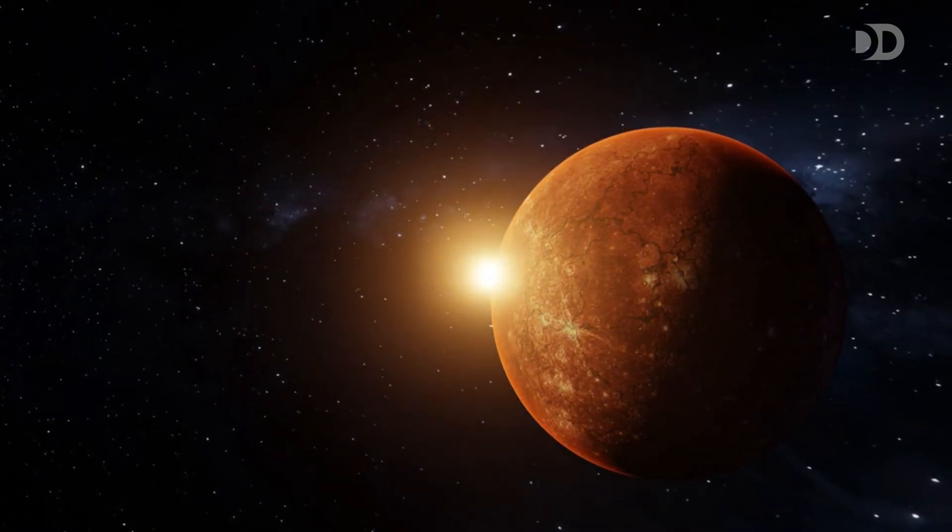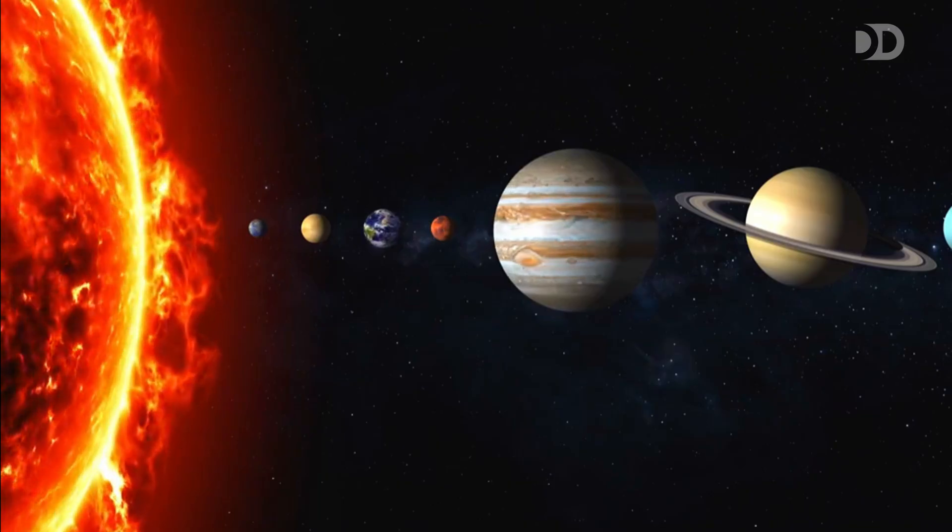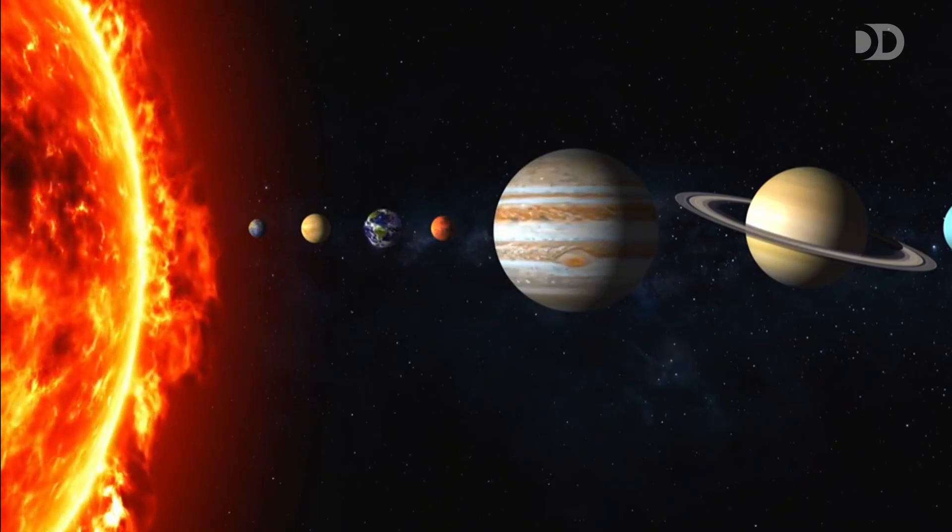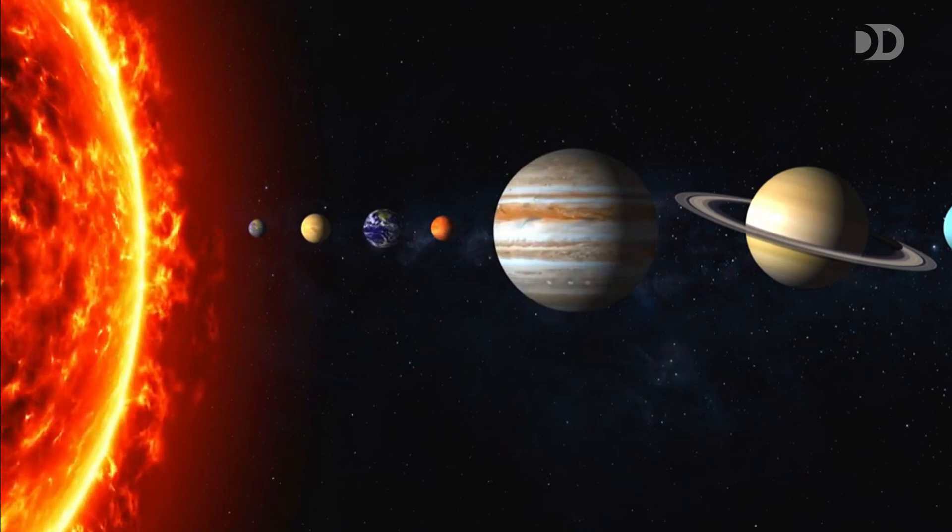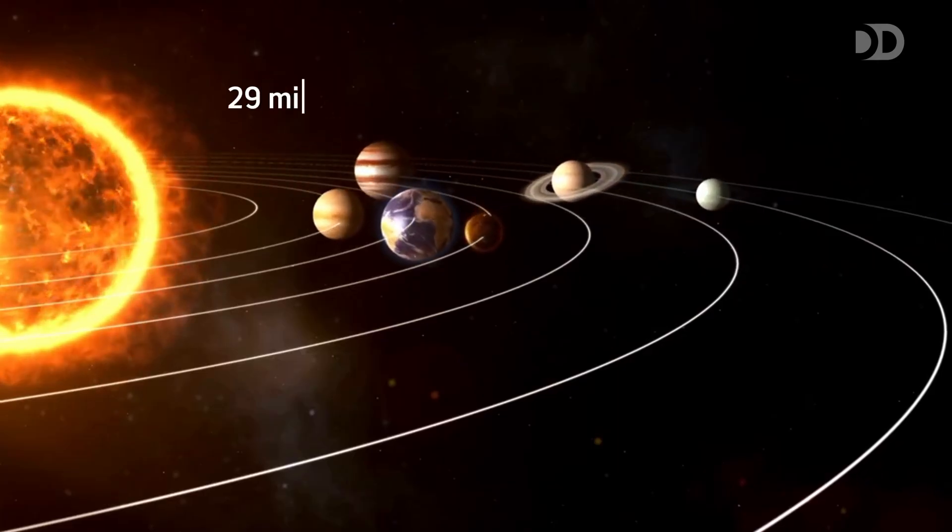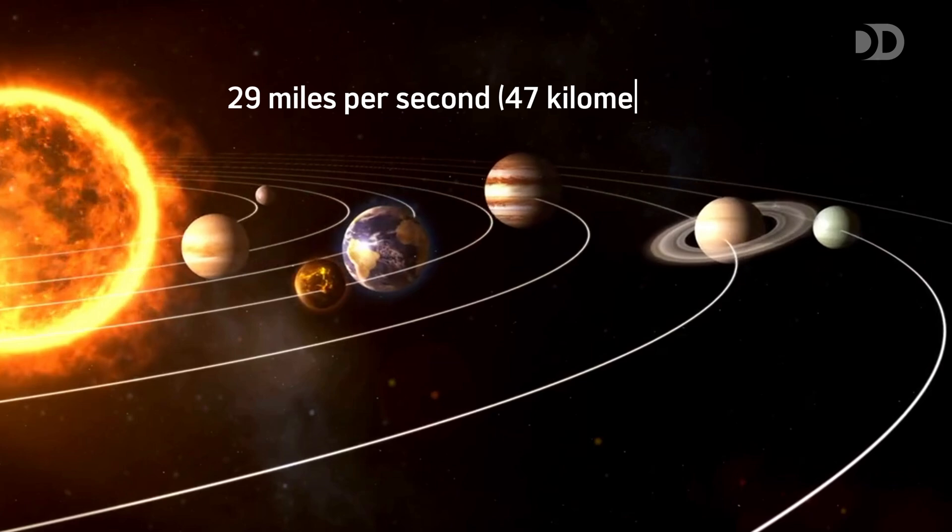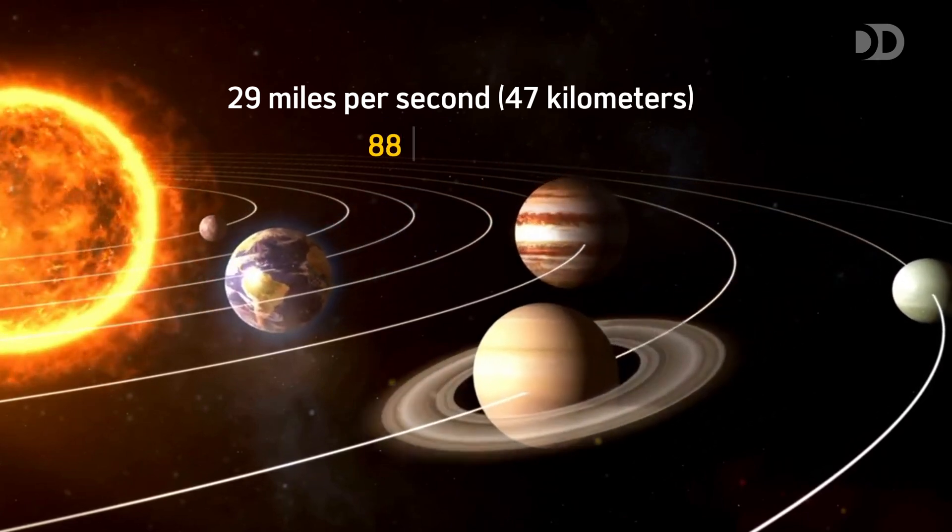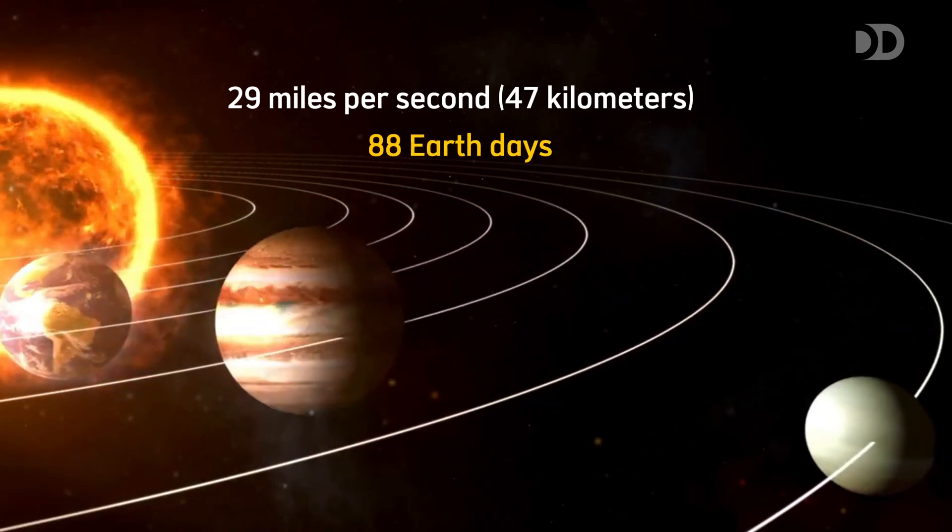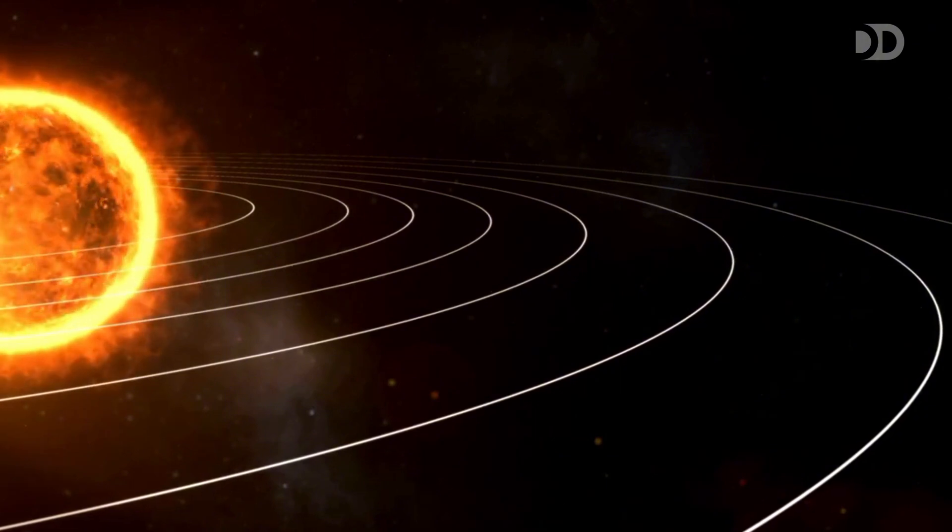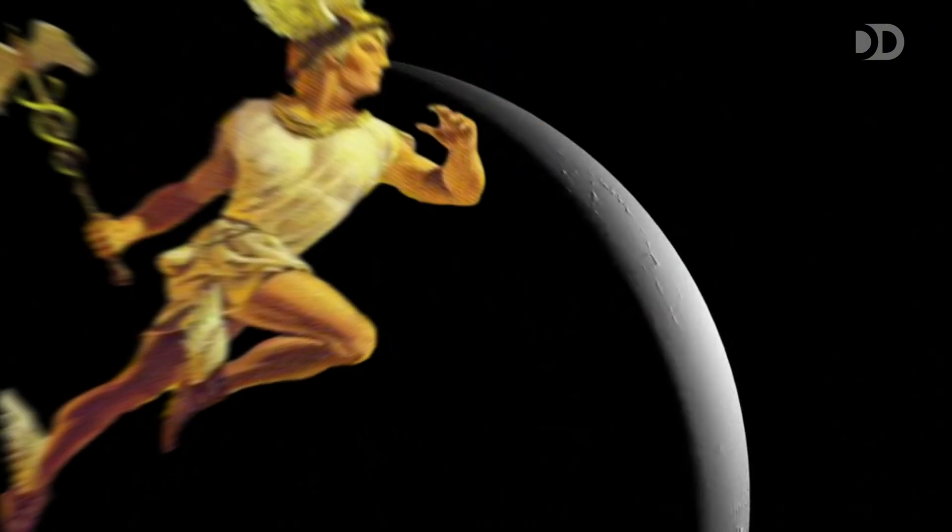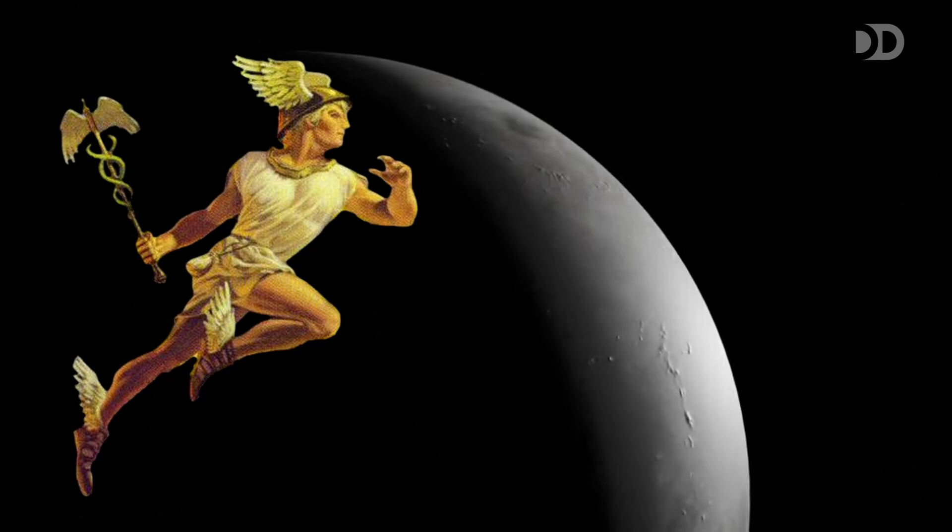This proximity means Mercury is blasted by intense solar radiation, making it a harsh and unforgiving environment. Racing around our star at nearly 29 miles per second, Mercury completes a full orbit in just 88 Earth days. This rapid journey is why ancient astronomers named it after the swift-footed messenger god, Mercury, who was said to dart between the worlds.